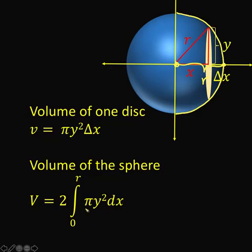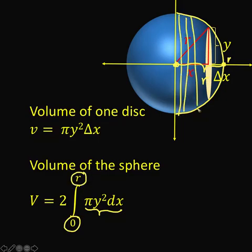Since the volume of one disk is pi y squared dx, and we want to sum up the volume of these disks from this point x equals 0 to x equals r, then we can now sum up all these volumes with changing height, because the height would depend on the value of the function. And summing those up would now be this elongated s, which is our symbol for integration, and we are going to perform the summing up of these volumes from x equals 0, which is now this number, up to x equals r.